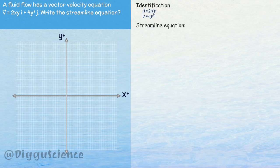We can use the streamline equation dy over v is the same as dx over u. Plugging in the u and v values: dy over 4y squared is equal to dx over 2xy. Cross out the y value, integrate both sides.